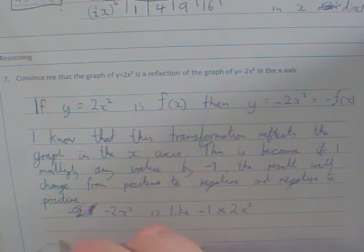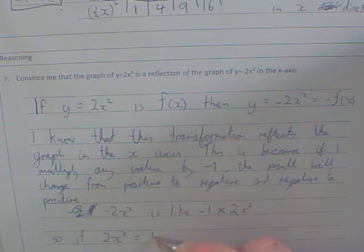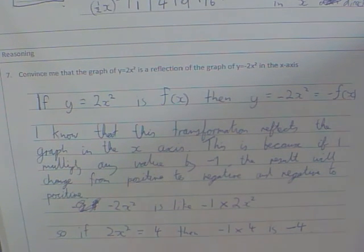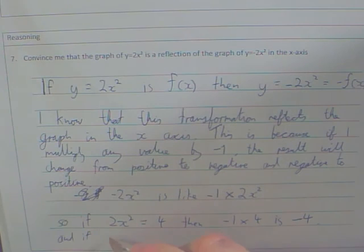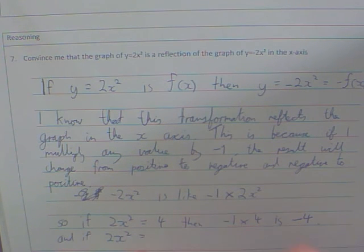So if 2x squared equals 4, then minus 1 times 4 is minus 4. And if 2x squared equals, let's say, minus 10, then minus 1 times minus 10 is 10.